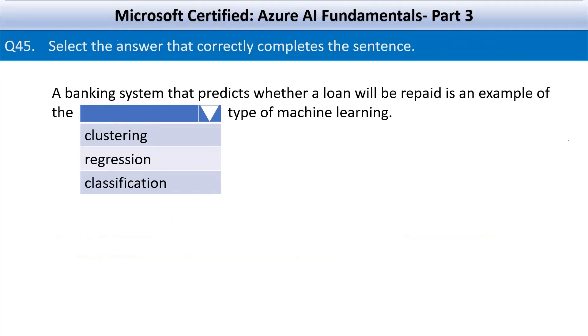Next question: select the answer that correctly completes the sentence. A banking system that predicts whether a loan will be repaid is an example of which type of machine learning? Your options are clustering, regression, and classification.